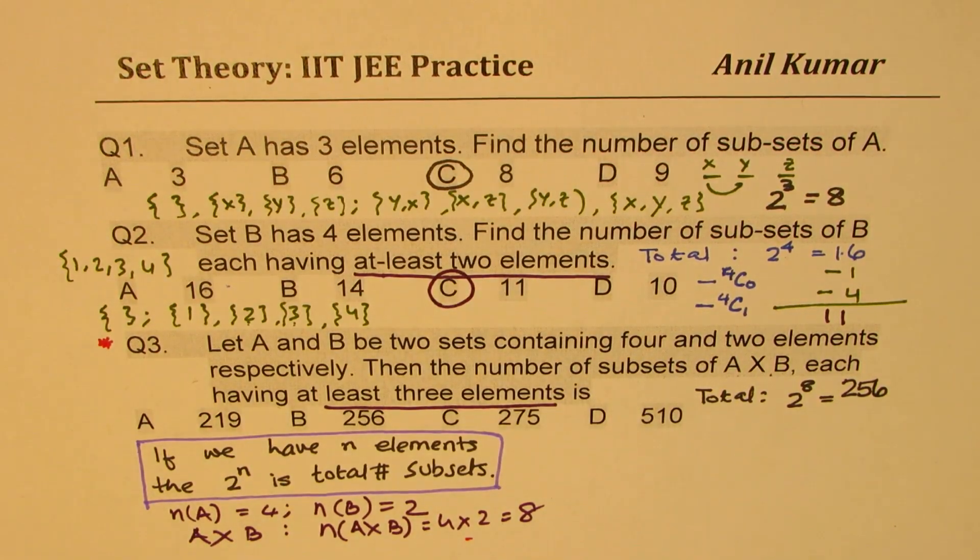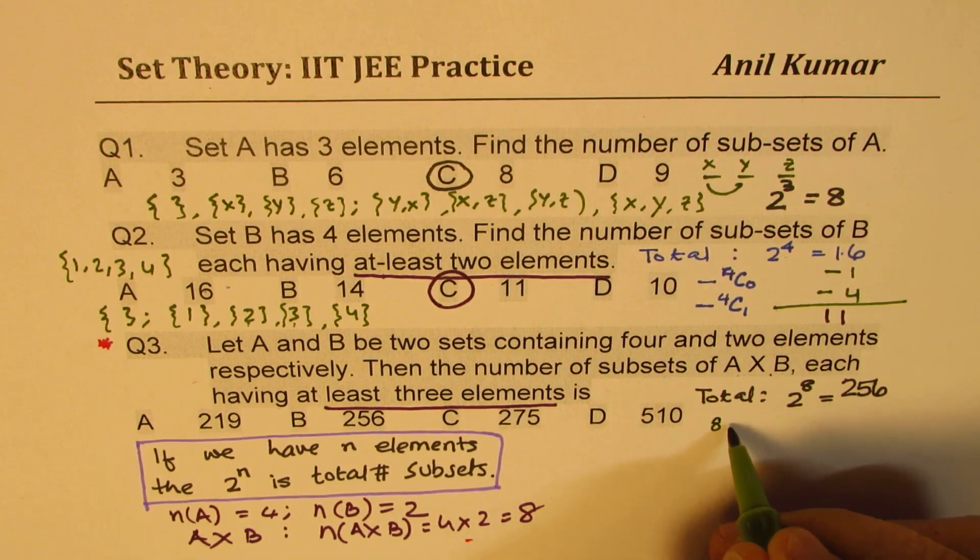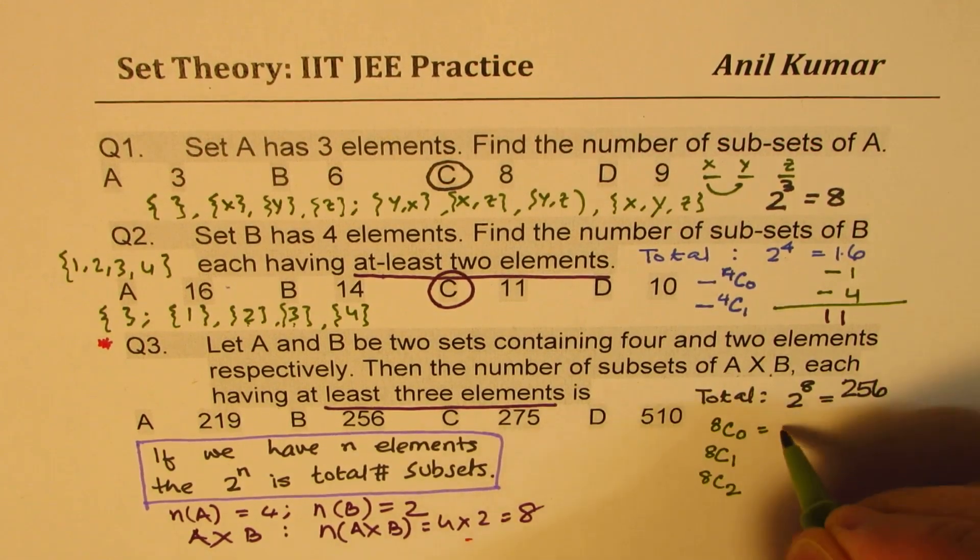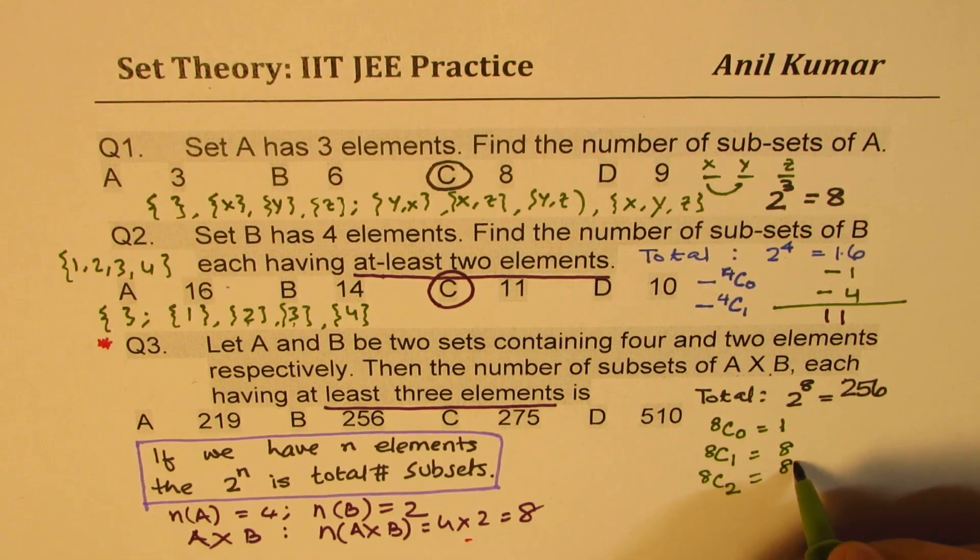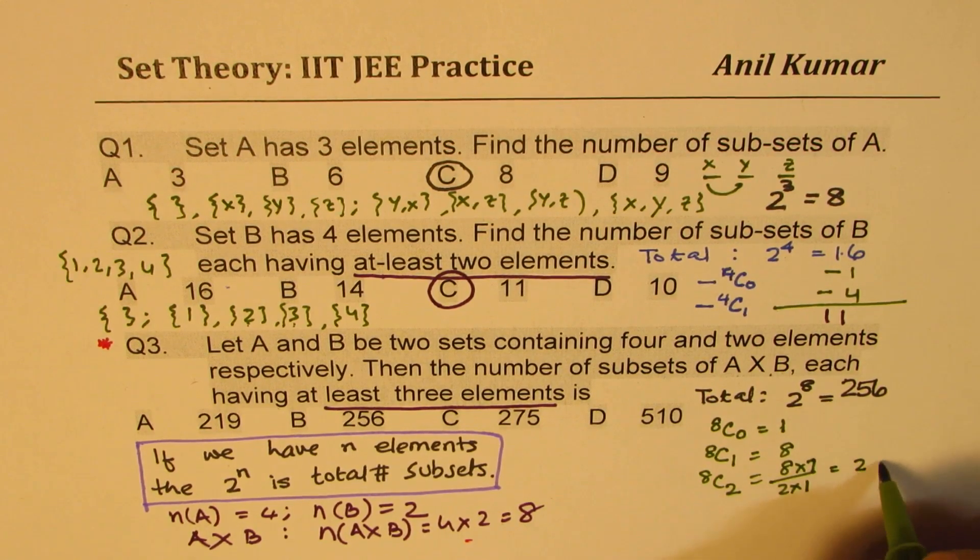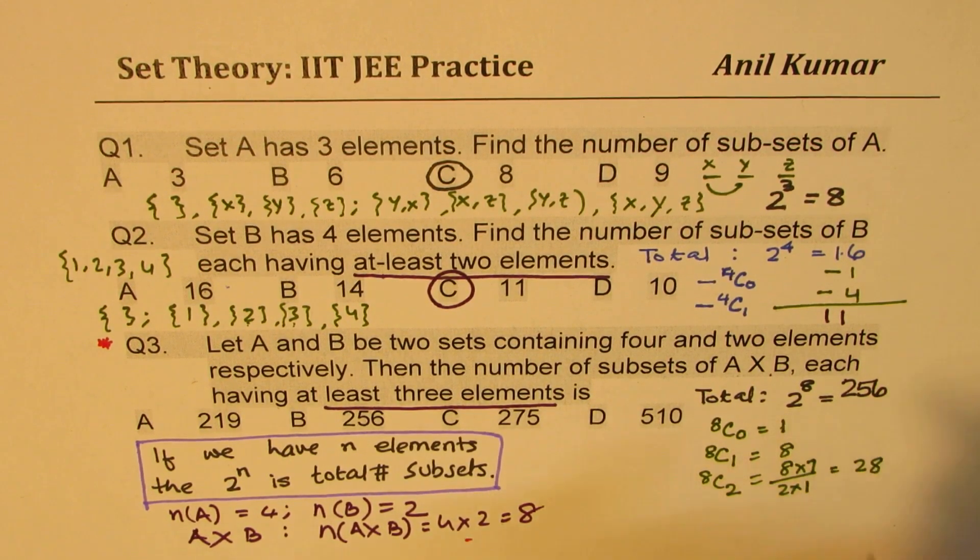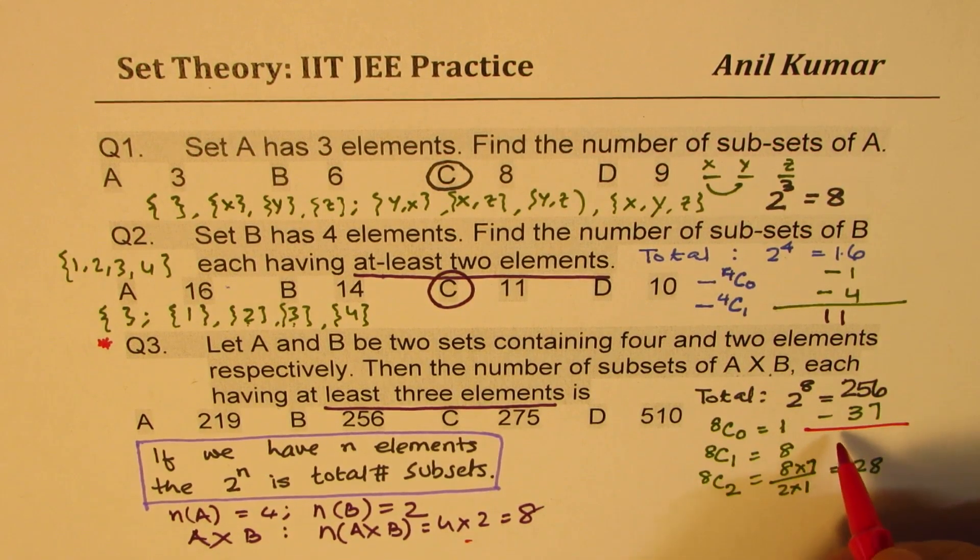So from 256, we have to take away those which have no element. That is to say, from eight, we have to take away those which have no element, those which have one element, and we have to take away those which have two elements. Now these which have no element is just one. And this is eight, and which have two elements is 8 times 7 divided by 2 times 1. Which is, this goes four times, 28. So that makes it 28 and 1, 2, 9, and take away, so minus 37. Let me write this as minus 37. And then we'll find the answer. So that gives us 219.